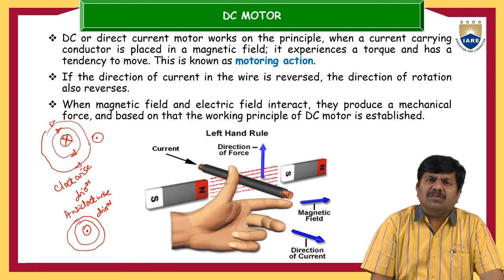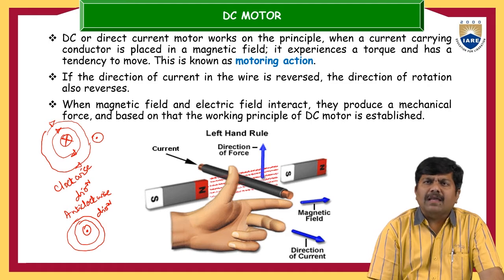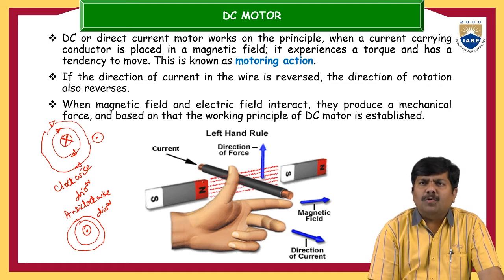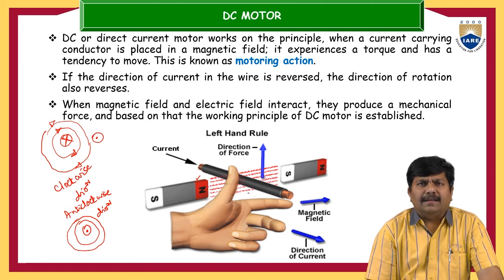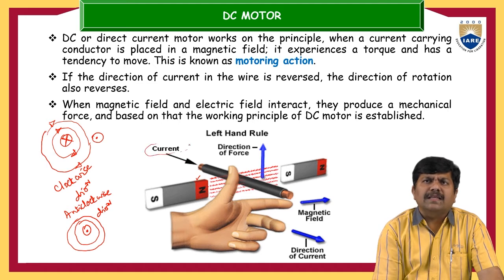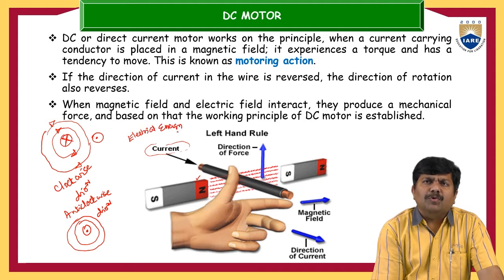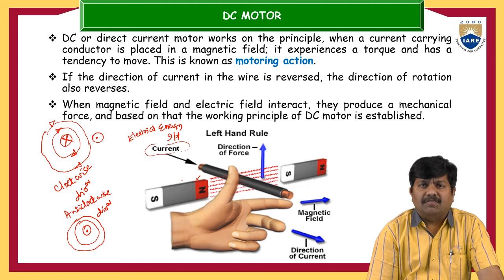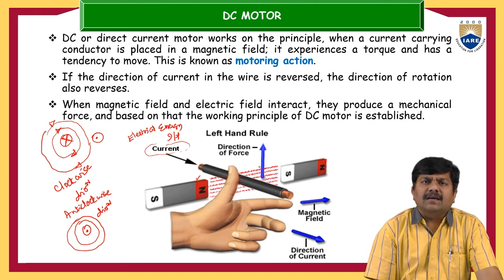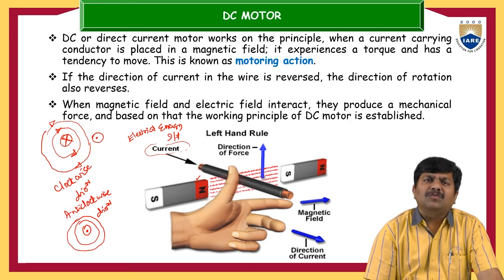Now, the direction of the force: in the magnetic field, let us assume a magnetic field produced by keeping a North Pole and South Pole. In between, if we keep any conductor and allow some current through it, we are giving electrical energy as input. The DC motor is a conversion device — a transducer which converts electrical energy into mechanical energy. So, in order to examine this conversion, we must supply some amount of electrical energy to the DC motor.